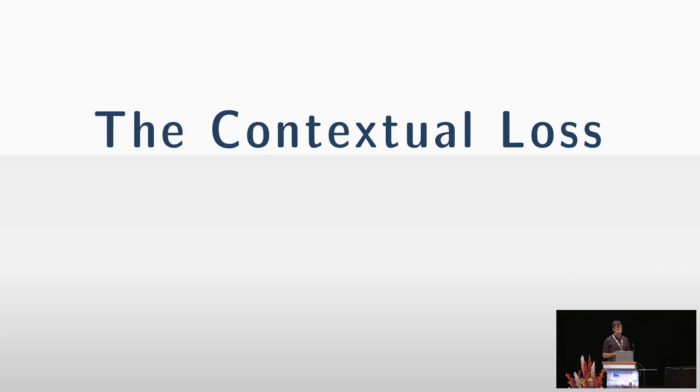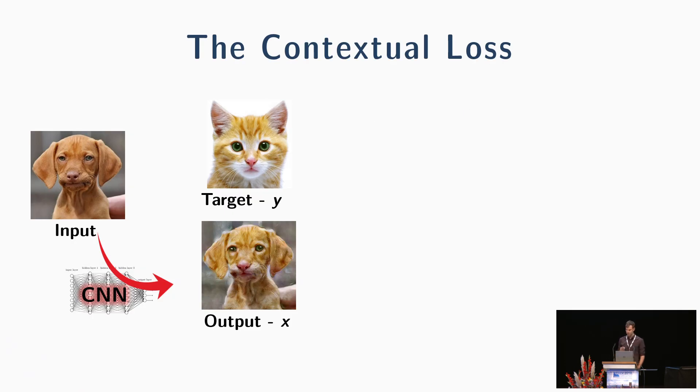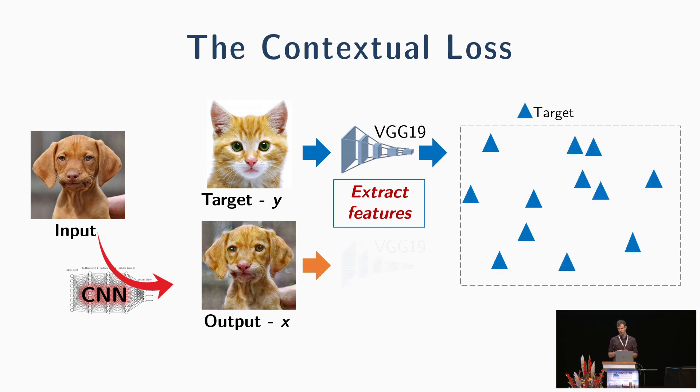Let me now explain how we design the contextual loss using the nearest neighbor field. Our pipeline is quite simple. We feed CNN with an input image and generate an output image. We then extract deep features and represent each image as a set of points in a high-dimensional space.